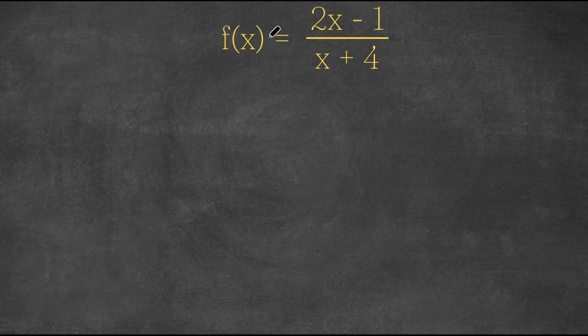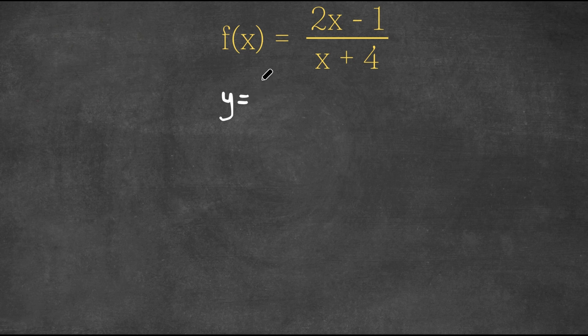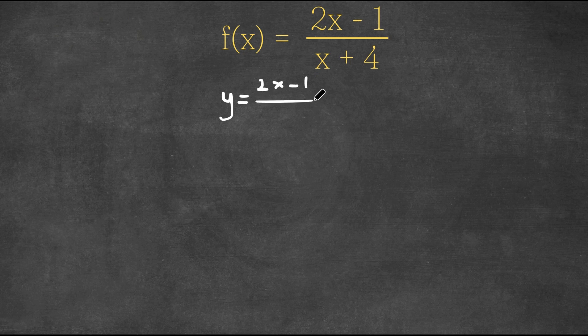So right here we have f(x) = (2x - 1)/(x + 4). And I'm going to first rewrite the f(x) as y. So now we have y = (2x - 1)/(x + 4).